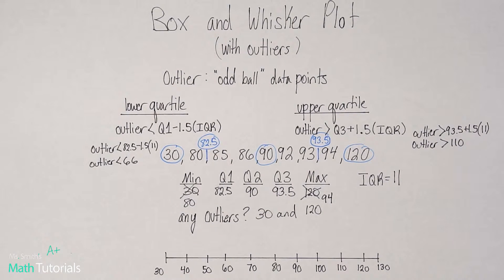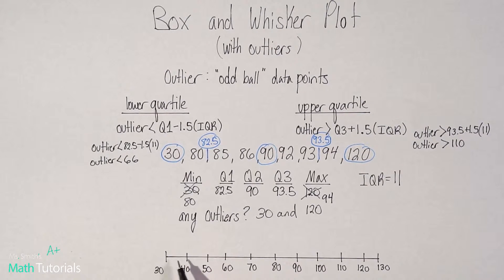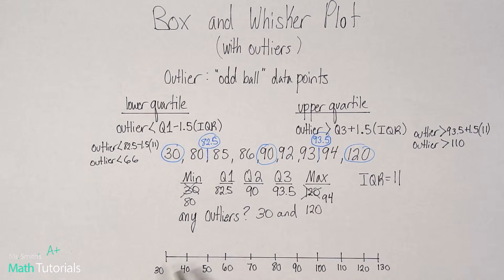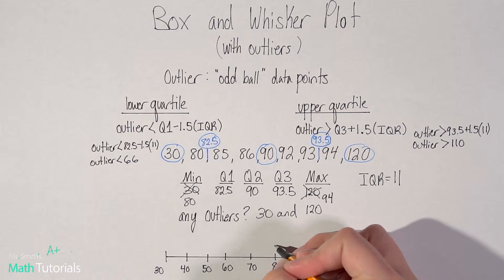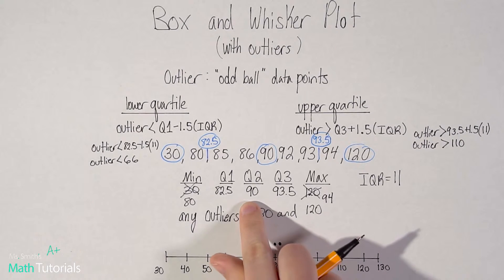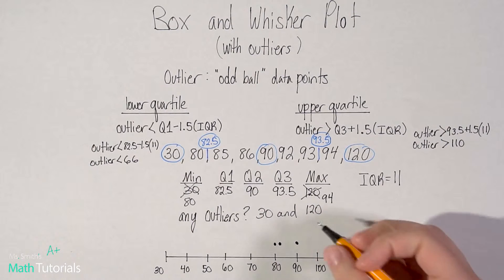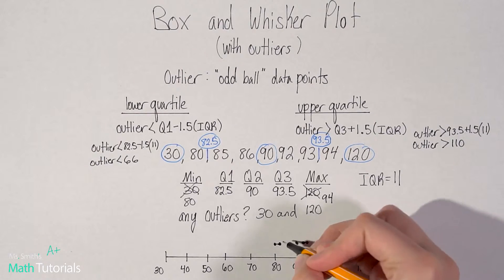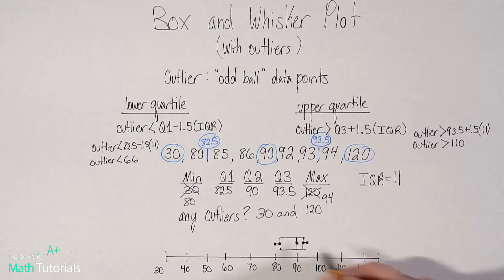So how do we turn this into a box and whisker plot? Well, I've got my five number summary. I went ahead and already created a number line. You will need to create one that matches the numbers. So you would need to be able to go all the way from 30 to 120 on your number line, which is what I've done here. And I actually went a little above and went to 130. So my minimum would be 80. Q1, 82.5, that'd be somewhere in there. Q2 would be 90. Q3 would be 93.5, somewhere in there. And my maximum would be 94. Somewhere in there. See how tiny that box it ended up being. So I create my little whiskers, right? And with my three innermost points, I'm going to do a box.